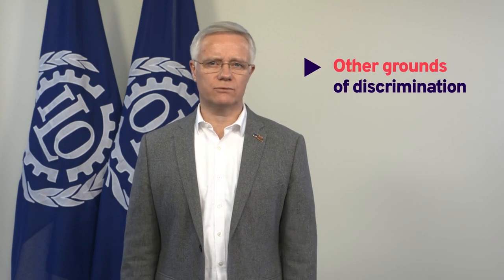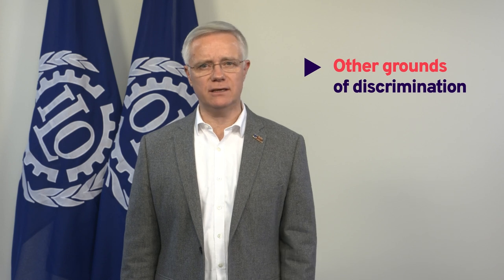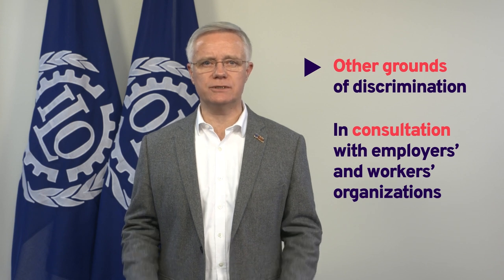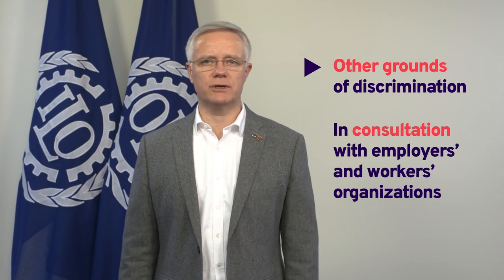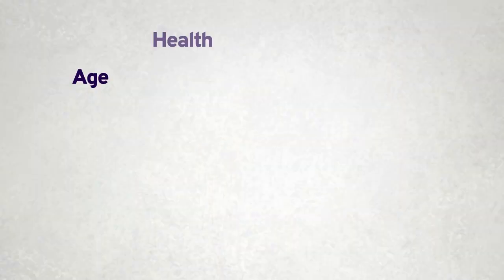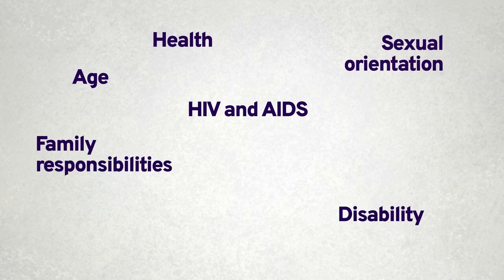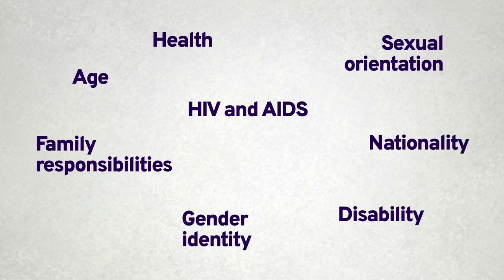Convention 111 also provides protection from discrimination based on other grounds which can be determined nationally after consultation with representative organisations of employers and workers and with other appropriate bodies. Some countries have adopted a longer list of prohibited grounds of discrimination, such as age, health, HIV status, family responsibilities, disability, sexual orientation, gender identity, and nationality.